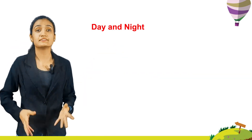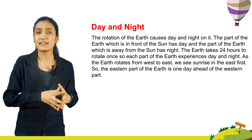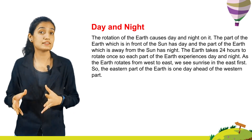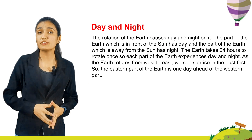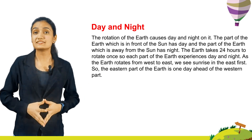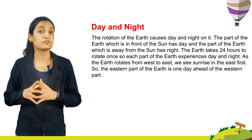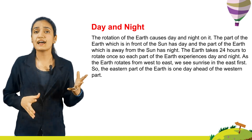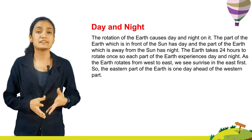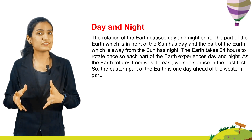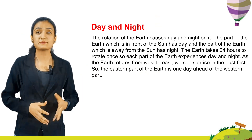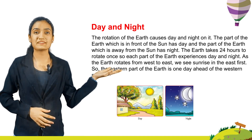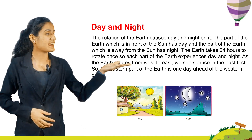Day and night. The rotation of the earth causes day and night on it. The part of the earth which is in front of the sun has day, and the part of the earth which is away from the sun has night. The earth takes 24 hours to rotate once, so each part of the earth experiences day and night. As the earth rotates from west to east, we see sunrise in the east first. So the eastern part of the earth is one day ahead of the western part. Here you can see the picture of day and night.